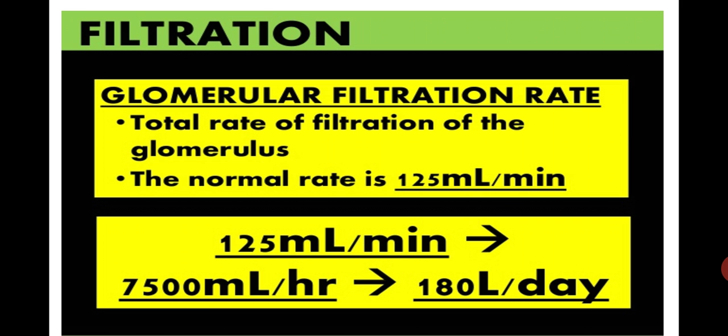The glomerular filtration rate (GFR) is the total rate of filtration by the glomerulus. The normal GFR is 125 ml per minute. All nephrons work together, filtering blood in the Bowman's capsule at 125 ml per minute, which equals 7,500 ml per hour, or 180 liters of blood filtered per day.